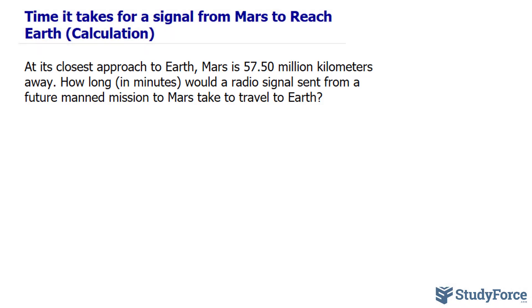To answer this question effectively, you need to understand that radio waves are a form of electromagnetic radiation. And in a vacuum, such as that of space, these waves travel at the speed of light. So to do this problem, we need to know the speed of light, because there's a relationship between speed, distance, and time. That is, speed is equal to the distance divided by the time.